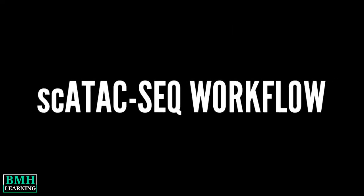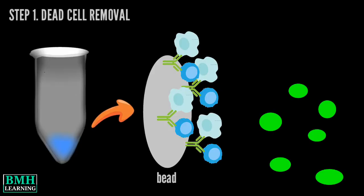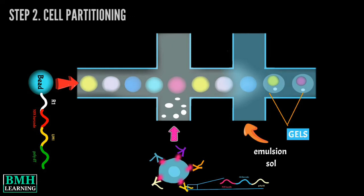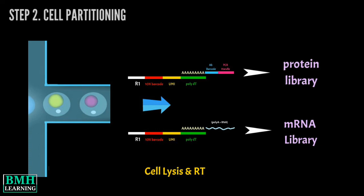Workflow. Step 1: Dead Cell Removal — if viability and cell count are low, dead cells are removed using a magnetic bead-based approach to enrich live cells. Step 2: Cell Partitioning — cells and barcoded beads are isolated in droplets using the 10x Genomics Chromium instrument.